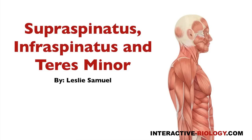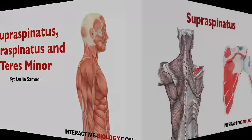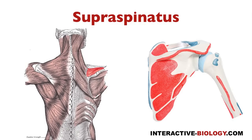Those three muscles would be supraspinatus, infraspinatus, and teres minor. I wanted to take these together because it's easy to remember their insertions when you look at the three of them together. So let's get right into it and deal with the first muscle, which would be supraspinatus.